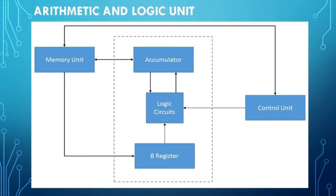The next subunit of CPU is arithmetic and logic unit. This unit performs arithmetic calculations and logical operations. All data are sent here for processing and after manipulation, the control unit directs the result to memory unit. This unit consists of accumulators and registers. Accumulators store the result of mathematical calculations temporarily till the control unit gives the transfer instruction. Registers are a small memory of CPU which stores digital information.